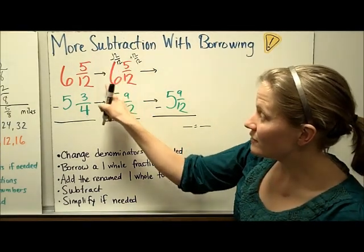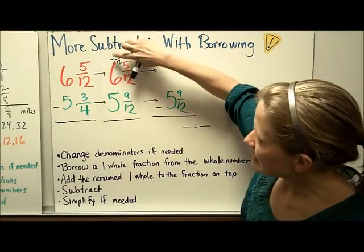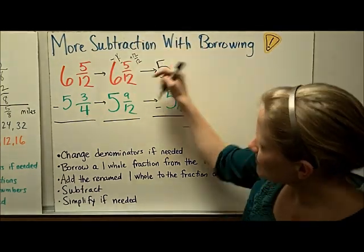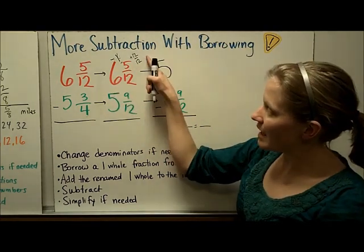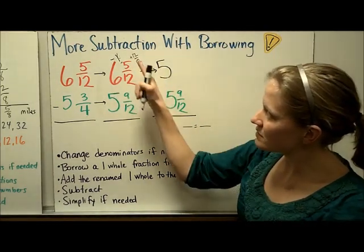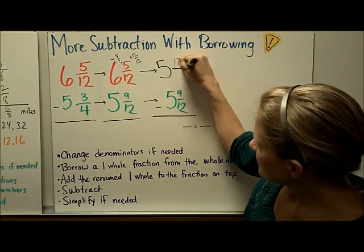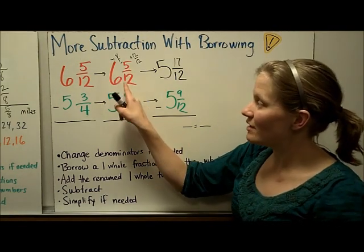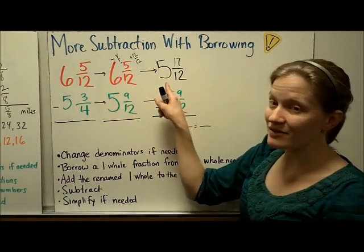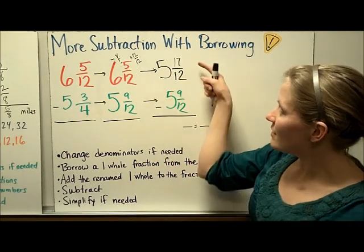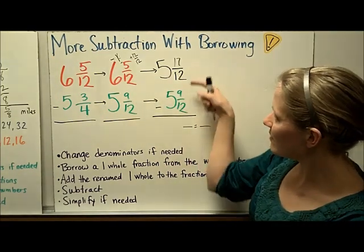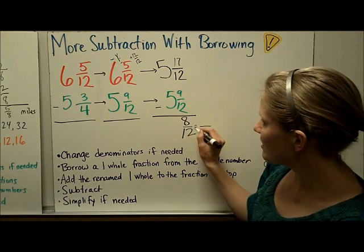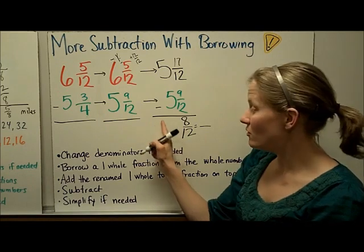So when you take away 12/12 or 1, you might even want to write that as taking away 1 whole. The new whole number becomes 5 here. And then I'm going to add 12/12 plus 5/12. 12 plus 5 is 17. So now we have renamed or borrowed 6 and 5/12 into 5 and 17/12. These are equivalent fractions. Then I can do 17 minus 9 is 8. And I keep the same denominator. 5 minus 5 is 0. So I have no whole number.